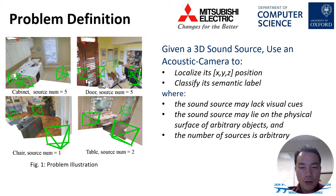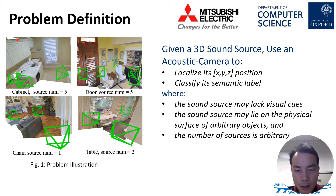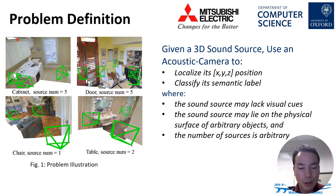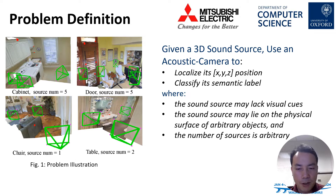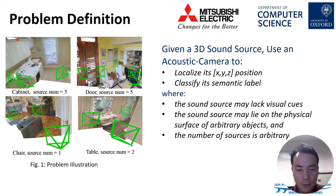For the problem definition, we propose to localize a 3D sound source — its XYZ coordinates — and to classify its semantic label. We propose to use an acoustic camera to capture the scene from multiple views. In our case, we assume the sound source may have no visual entities because it is either too small or exhibits no visual discrimination. But the sound source has to lie on the physical surface of the objects, and the sound source number is arbitrary.